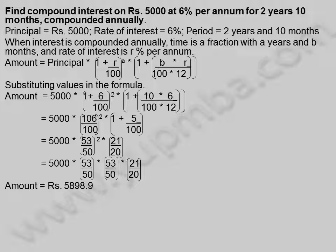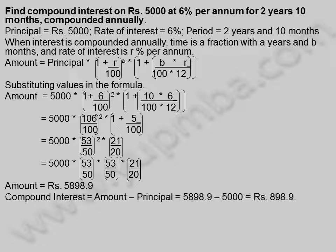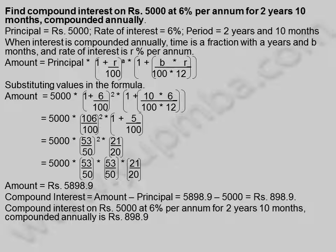Amount = 5,898.9 rupees. Compound interest = Amount − Principal = 5,898.9 − 5,000 = 898.9 rupees. Compound interest on 5,000 rupees at 6% per annum for two years ten months compounded annually is 898.9 rupees.